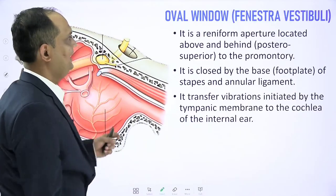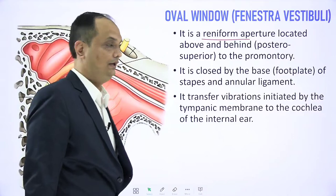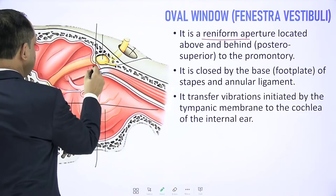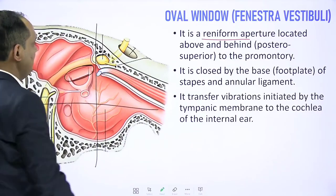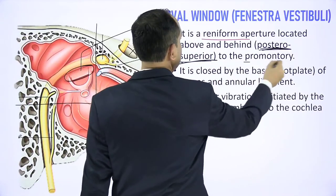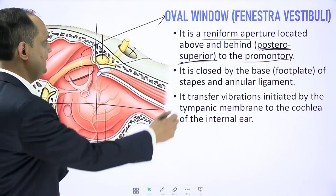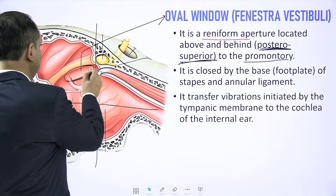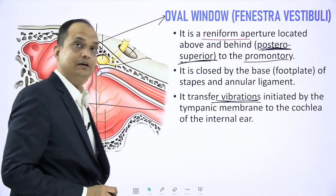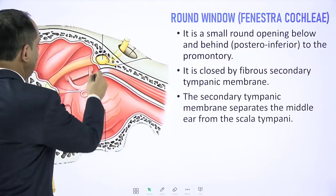The oval window is a reniform aperture located above and behind the promontory — in the postero-superior quadrant of the medial wall. It is posterior and superior in relation to the promontory. The oval window is closed by the footplate of the stapes and the annular ligament. Through this window, vibrations initiated by the tympanic membrane are transmitted to the cochlea of the inner ear.